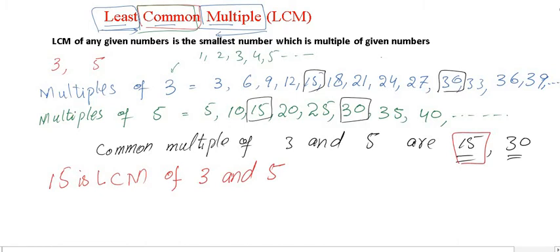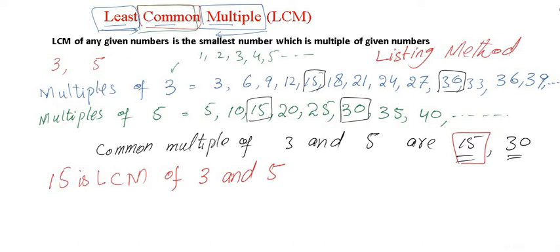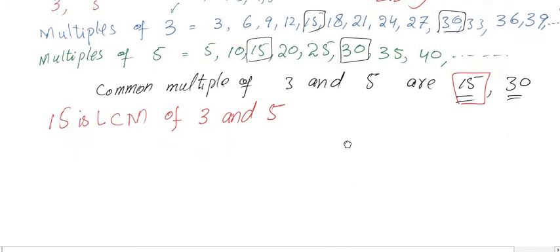This method is called the listing method. However, it is very difficult to find the LCM using listing if you have large numbers. So we have another method through which we can find the LCM even with big numbers, and that is called the prime factorization method.